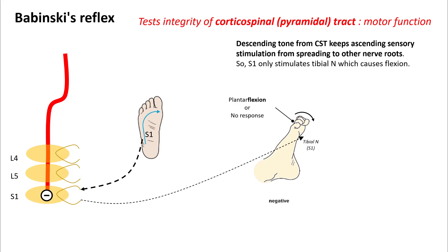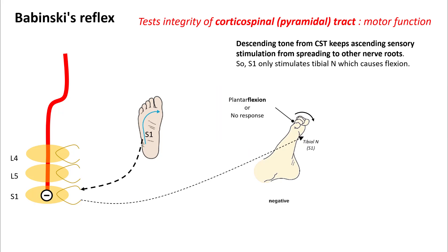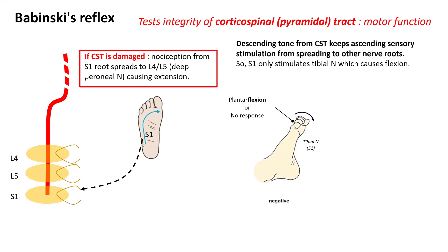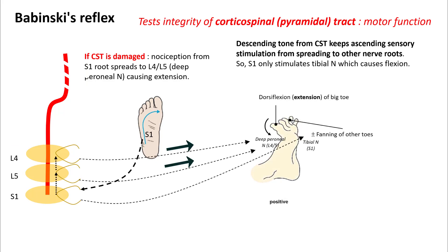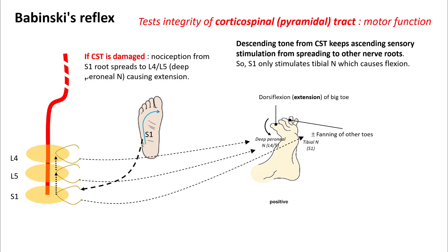The Babinski reflex tests the integrity of the corticospinal tract, which is the motor tract. There is an inhibitory tone from the corticospinal tract in the spine to prevent the spread of stimulus to other nerve roots. For example, stimulating the lateral aspect of the foot stimulates at the S1 level, which activates the tibial nerve and causes plantar flexion. However, if the corticospinal tract is damaged, the stimulus from S1 can spread up to L5 and L4, stimulating the deep peroneal nerve, which results in dorsiflexion or extension of the big toe and sometimes fanning of the other toes — this is a positive Babinski reflex.